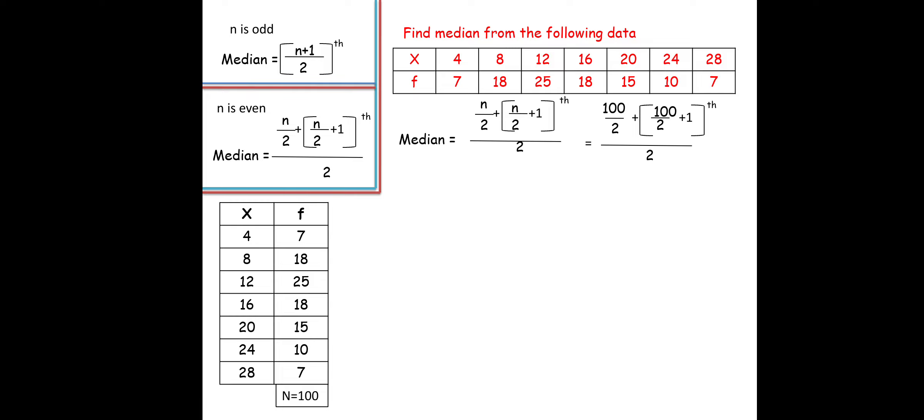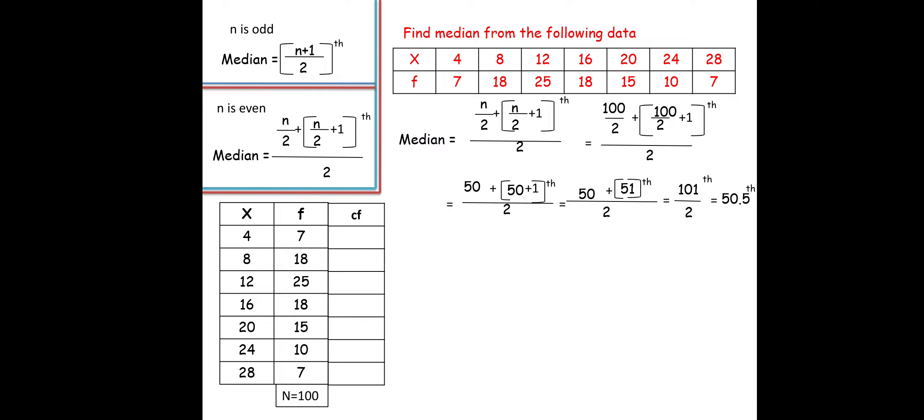Solving: 100/2 = 50, so (50th + 51st value) / 2. This can be written as the 50.5th value. Again, as in the previous case, we need to add a cumulative frequency column.